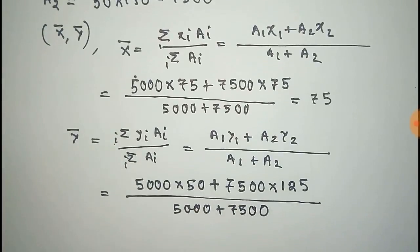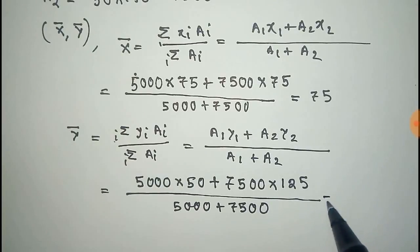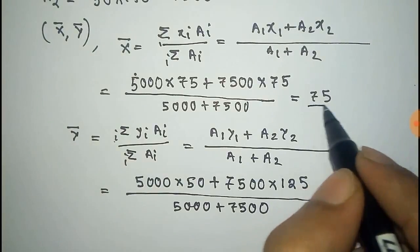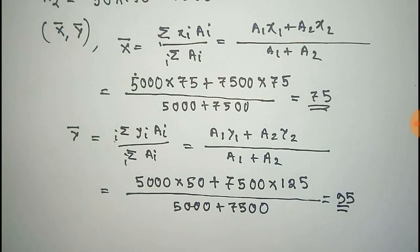After calculation, we get this value as 95 units. So x-bar is 75 and y-bar is 95. Thus we get the position of the centroid at (75, 95).